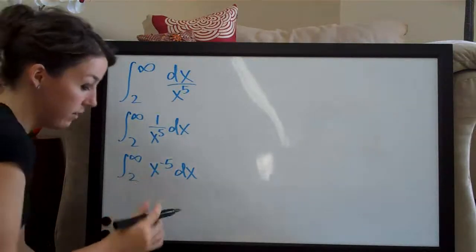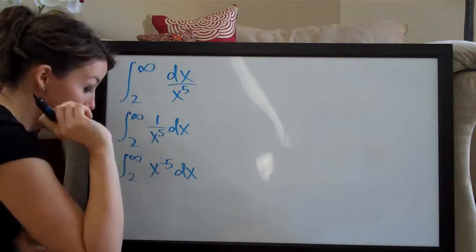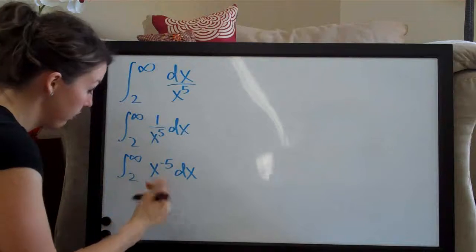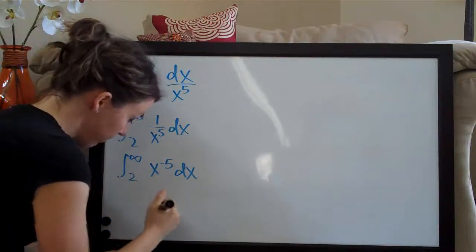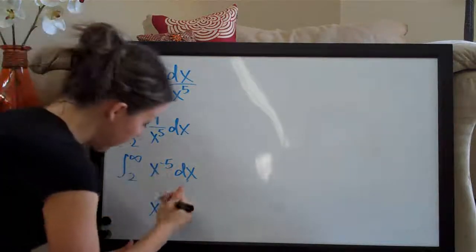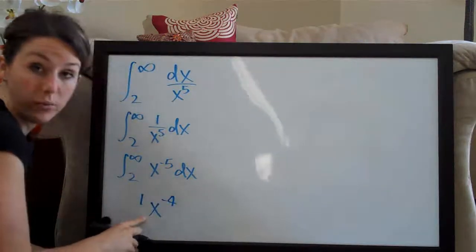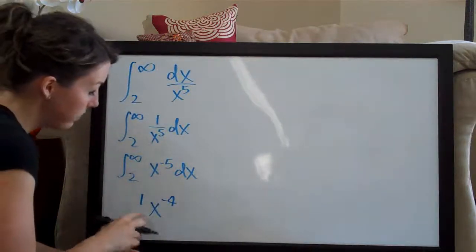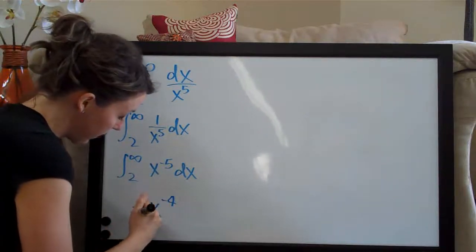Now we have something that I feel more comfortable working with and the first thing we're going to do is take the integral here. So x to the negative five, we're going to take the integral. We add one to the exponent. So negative five plus one is negative four. And then the coefficient on this term is one, which is implied, and we divide the coefficient by the new exponent, so one over negative four.